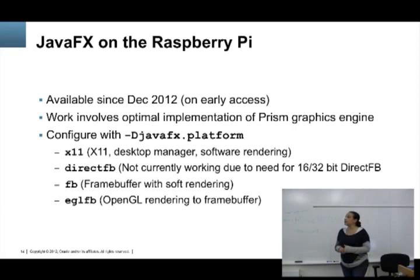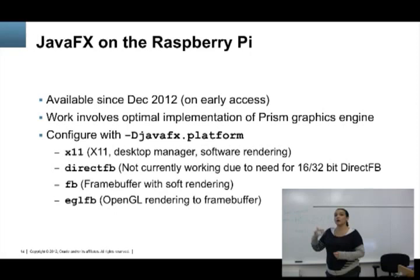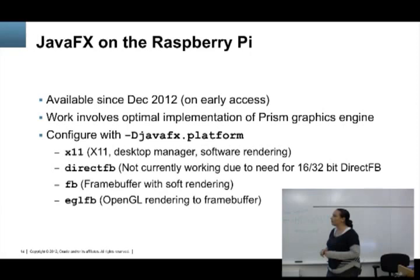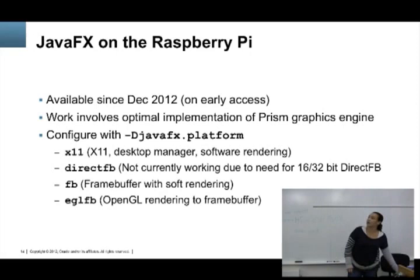For JavaFX — again it's early access — what you have on the Raspberry Pi is JDK 7 with JavaFX. It has an optimized implementation of Prism for this particular ARM. You can configure how you want FX to run: the lower you go in the platform list, the faster it runs. Using OpenGL gives you hardware acceleration. For desktop manager, use X11. Direct frame buffer is not possible because the Raspberry Pi is only 8-bit and you need at least 16 to 32 bits. A frame buffer does work. EGL using OpenGL should be the fastest, potentially using hardware acceleration.